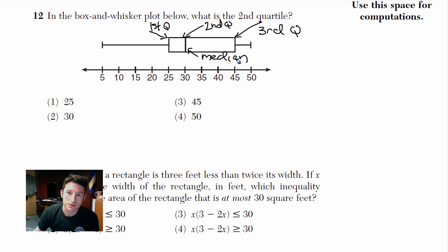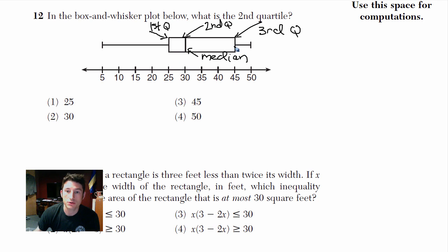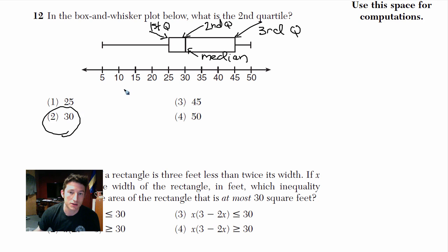Another name for the second quartile is the median — that's the middle number. So if they ask what's the median, you look at whatever value is at that line. Here: first quartile is 25, second quartile is 30, third quartile is 45. This question wants the second one, so it's 30, choice 2. Done — just look at the box.